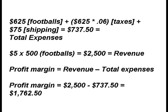Let's say if every committee member sold all 500 footballs at a cost of $5 each, the revenue would be $2,500. To simplify the concept, the profit margin is the difference between the revenue and the total expenses required to manufacture and distribute the product.